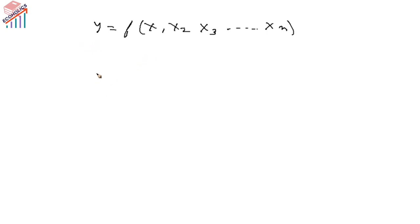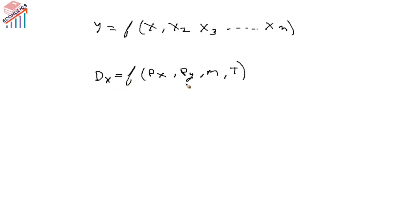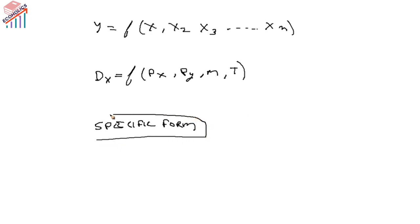For example, demand for a commodity depends on more than one thing: the price of that commodity, the price of other commodities, the money income of the individual, and tastes and preferences. So demand for x is dependent on these four important things. If we want to write the exact nature of the relation between dependent and independent variables, we write a specific form. Under specific forms, we use basic mathematical forms — the first being the linear function.